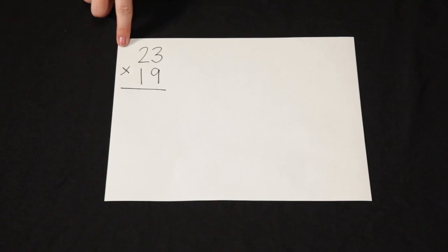I can use the area model of multiplication to multiply 23 times 19. This is somewhat similar to partial products, it's just setting it up in a slightly different visual way for students.